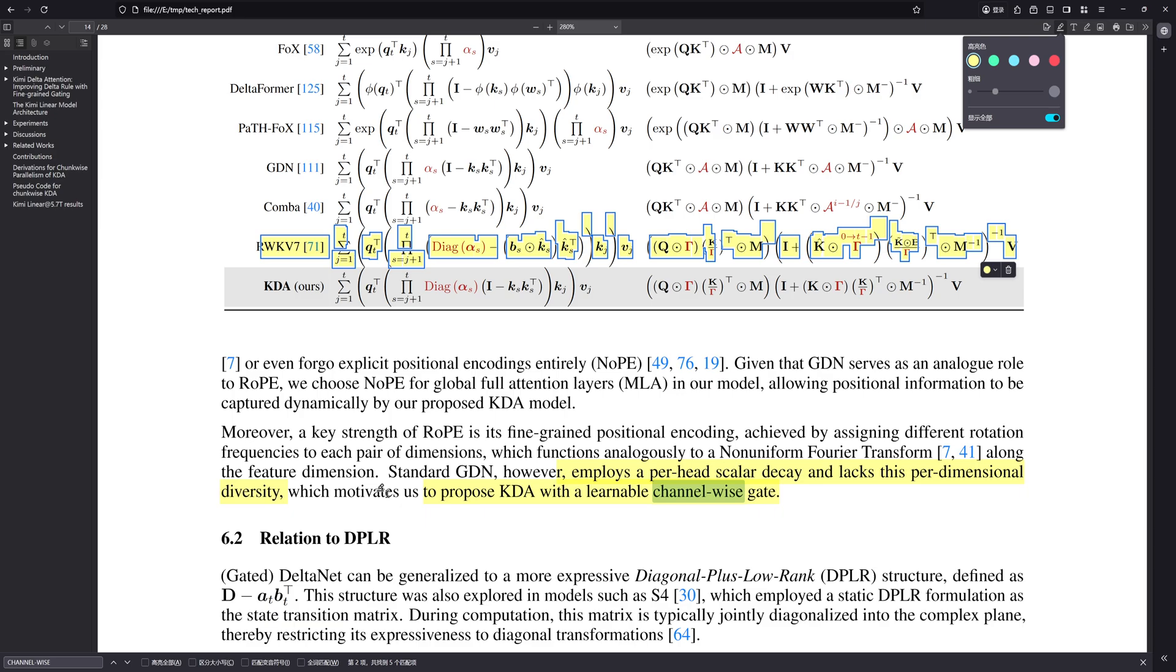Okay, you're making a strong case for that division of labor. Positioning KDA is handling the positional side. But if KDA truly represents the kind of expressivity breakthrough you're suggesting, why did their own ablation studies find that pushing the linear component further, going from that seemingly optimal 3.1 ratio to, say, 7.1 or even 15.1 KDA to MLA, actually resulted in worse validation perplexity. Considerably worse, in fact. The evidence in the paper seems to suggest that the model still needs that global context refresh from the full attention layers to generalize well across different tasks. The MLA layers provide this uncompressed global view, which seems crucial for preventing performance drops, especially in challenging retrieval scenarios.